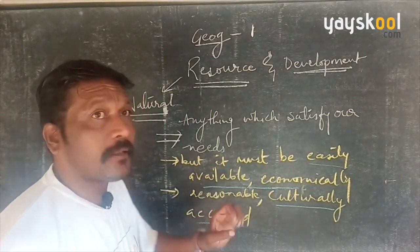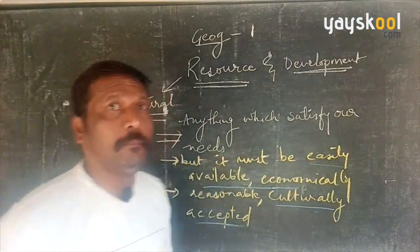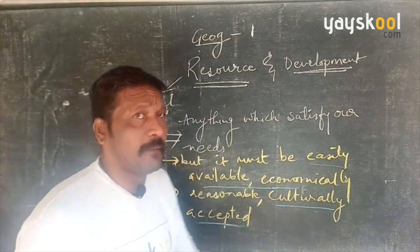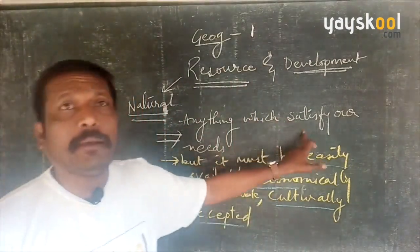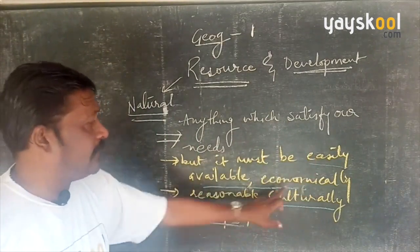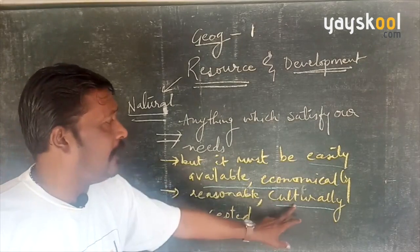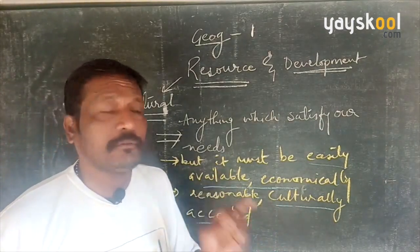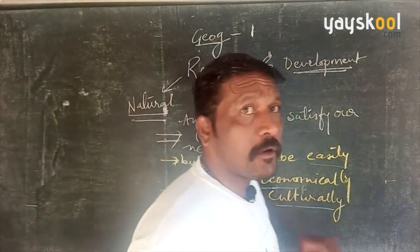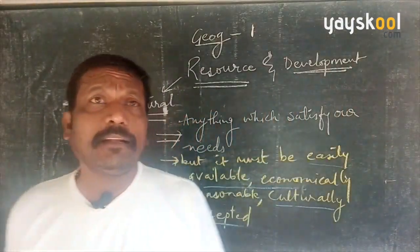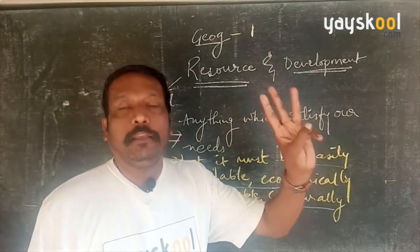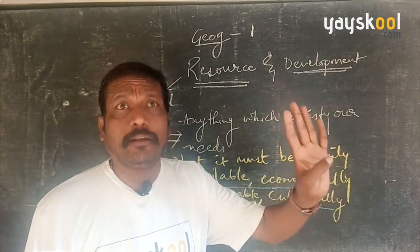The second condition is that resources must be economically reasonable — from a financial point of view, the rates should be acceptable. Third, they must be culturally accepted by society. Take the simple example of water: it satisfies our needs for drinking or washing, it is easily available, economically reasonable, and culturally accepted by all people. So water is a resource. This is the real definition of resources: anything which satisfies our needs, but must be easily available, economically reasonable, and culturally accepted.